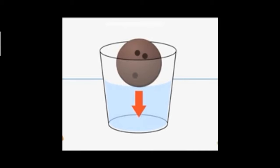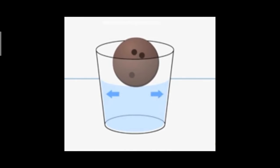Look carefully at what happens when we put this bowl in a glass containing a full of water. You should take a glass full of water. What will happen if you put a bowl in that water? Some water has spilled out. We can see this arrow — it indicates the movement of water. We can see that the bowl has displaced the water. This movement of water is called displacement.